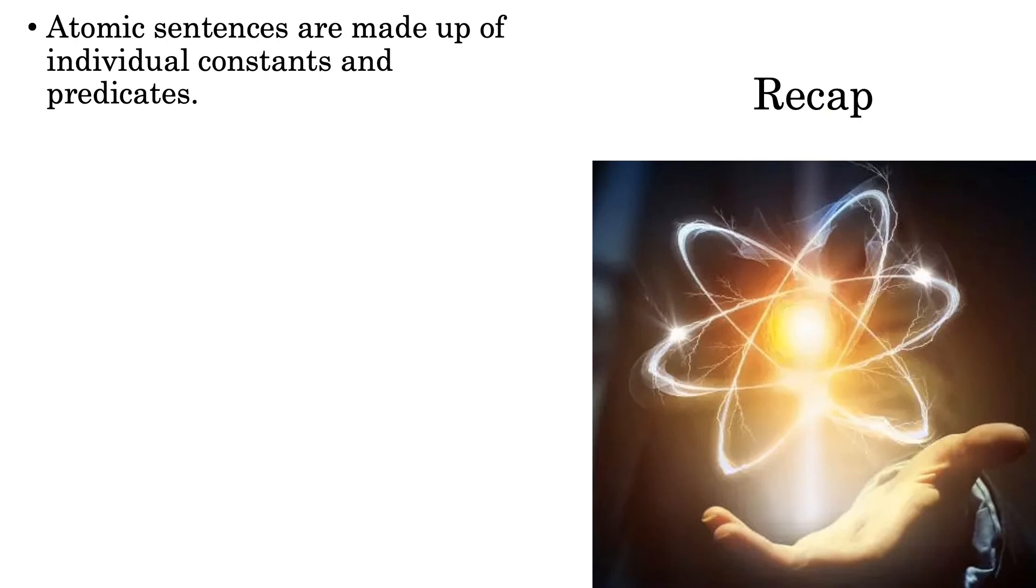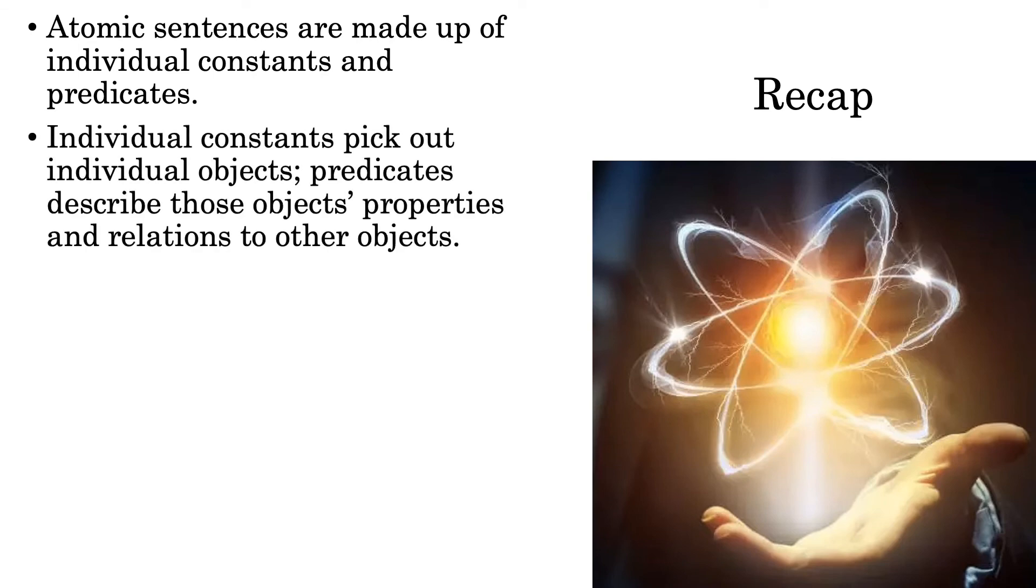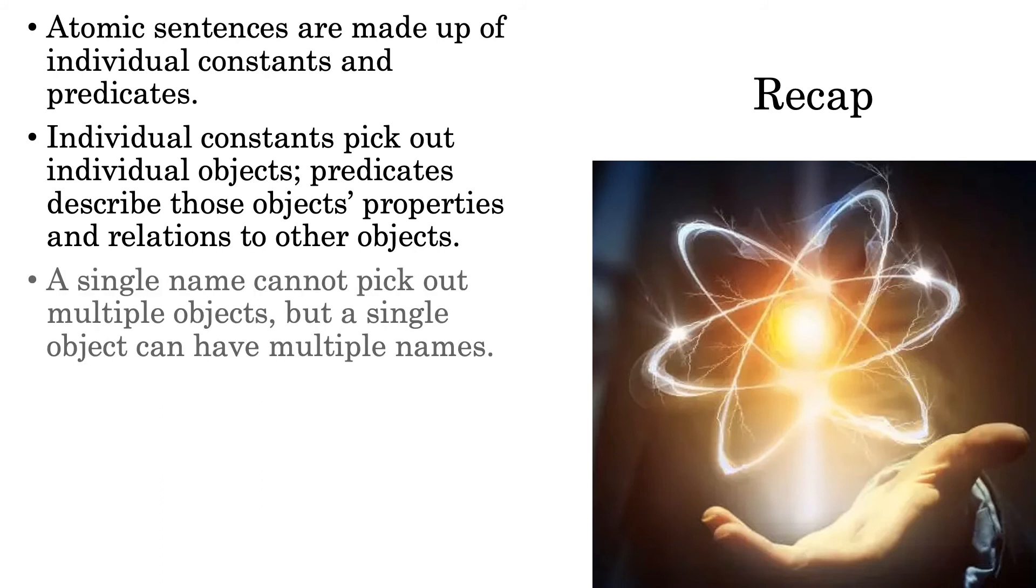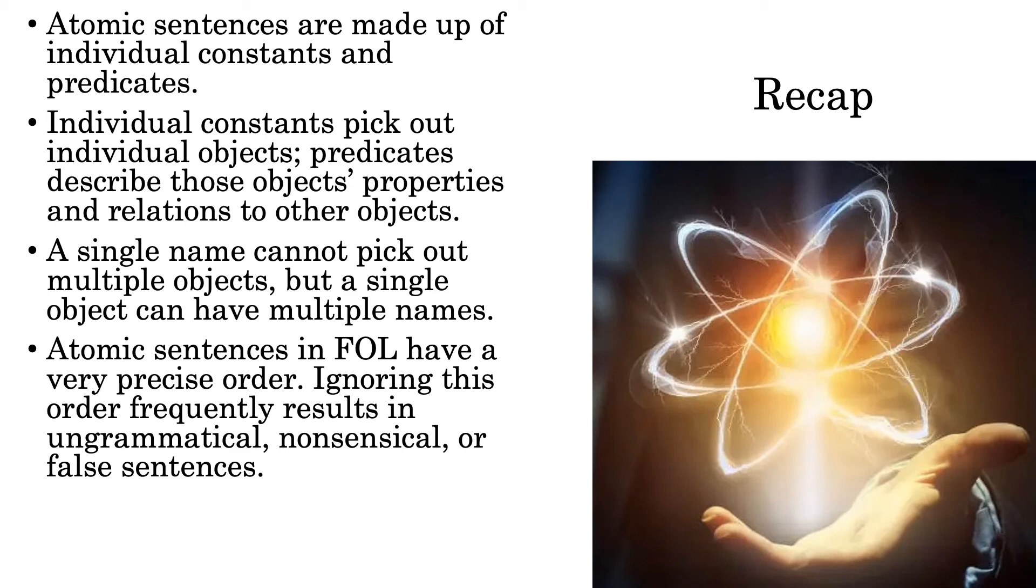Okay, so let's sum up the big take-home lessons. First, atomic sentences are made up of individual constants and predicates. Second, individual constants pick out individual objects. Predicates describe those objects' properties and their relationships to other objects. Third, a single name cannot pick out multiple objects, but a single object can have multiple names. Fourth and finally, atomic sentences in first order logic have a very precise order. Ignoring this order frequently results in ungrammatical, nonsensical, or false sentences.